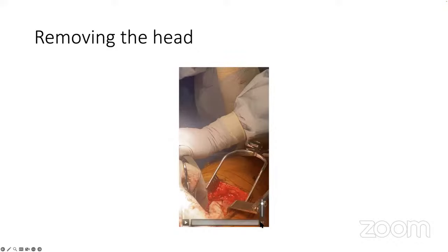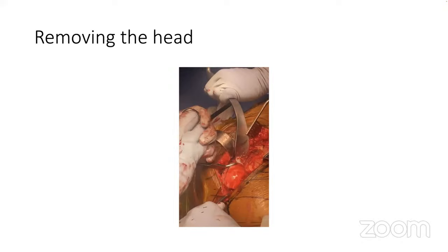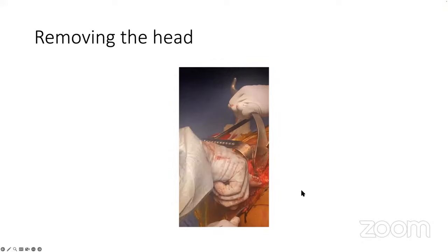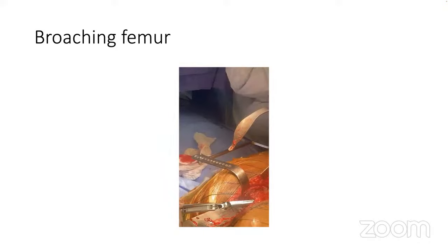Next step is removing the head — I use a tine or some sort of pointed device to grab and remove it. Very simple step. I usually prefer to do the femur first. The reason is I use a summit stem, which is fit-and-fill and follows the natural version of the femur — I can't change it very much; it goes where it goes, following the femoral canal. Once I know my femoral version, I can adjust the acetabular version accordingly. If the femoral version is not much, I may add some version to the acetabulum. So if I do the femur first, I know what to do with the acetabulum.